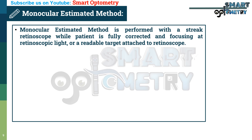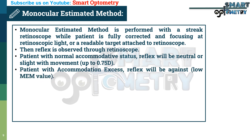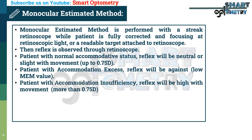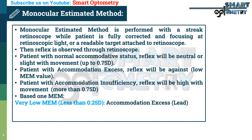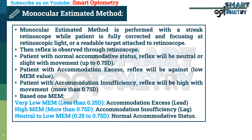The monocular estimated method (MEM) is performed with a streak retinoscope while the patient is fully corrected and focusing on the retinoscopic light or a readable target attached to the retinoscope. The reflex is then observed. Patients with normal accommodative status will show a neutral or slight with-movement reflex up to 0.75 diopters. Patients with accommodation excess will show an against movement — that is a low MEM value. Patients with accommodation insufficiency will show a high with-movement reflex greater than 0.75 diopters. Very low MEM indicates accommodation excess or lead of accommodation; high MEM indicates accommodation insufficiency or lag of accommodation; and neutral to low MEM indicates normal accommodative status.